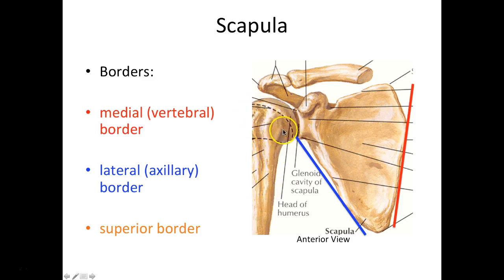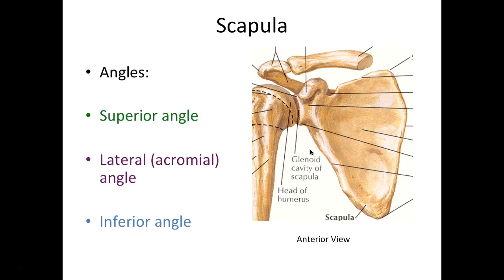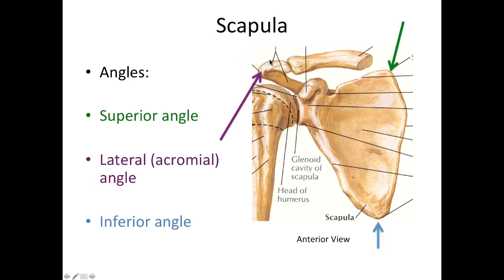The axillary border is headed to the armpit region, which would be the axilla. Lastly, we have the superior border, which is the superiormost border. We also have three angles: the superior angle at the superiormost point, the lateral or acromial angle — called acromial because this is our acromial or acromion process, which we'll get to in a minute, and it's found most laterally — and lastly the inferior angle, because it's the most inferior.